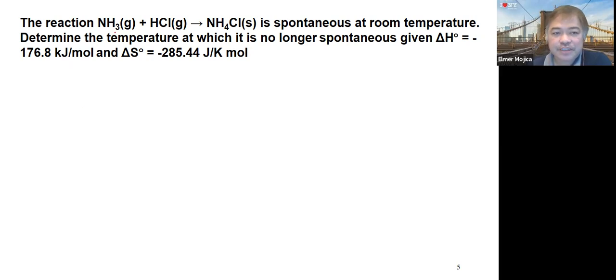You have here the reaction of ammonia with hydrochloric acid to produce ammonium chloride. It is spontaneous at room temperature. Determine the temperature at which it is no longer spontaneous, given the enthalpy as negative 176.8 kilojoules per mole, and the delta S equals negative 285.44 joules per Kelvin mole.